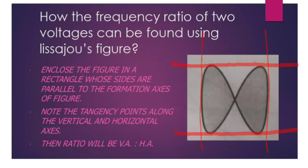How can we tell the frequency ratio using Lissajous figure? Step one: enclose the Lissajous figure in a rectangular box as given here. Then note tangency points along vertical and horizontal axis. Here this one and this one is our horizontal axis and how many tangency points are there? One, two,